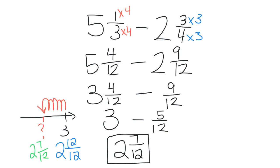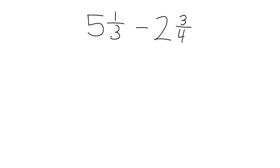So that's chunking. Now let's take a look at regrouping. So in regrouping, we begin with the same process. We still have to get our common denominator. So our common denominator in this case is still 12, and our new numerators are still 4 twelfths and 9 twelfths.